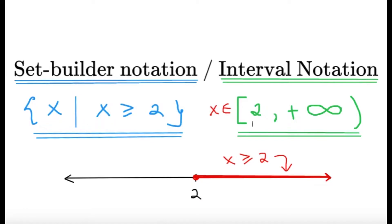We have the set builder notation on the left, which looks straightforward, and the interval notation on the right, which contains some brackets, parentheses, and numbers. The 'x is an element of...' part is optional — you can include it to explicitly state the variable, but it's often already understood from context.